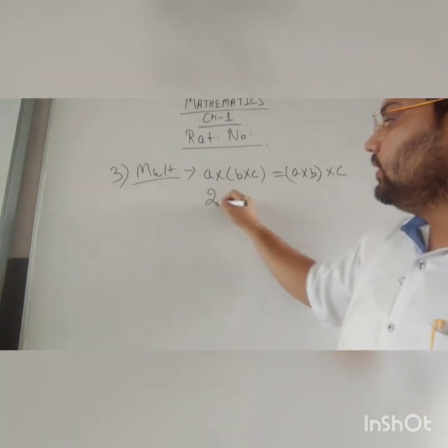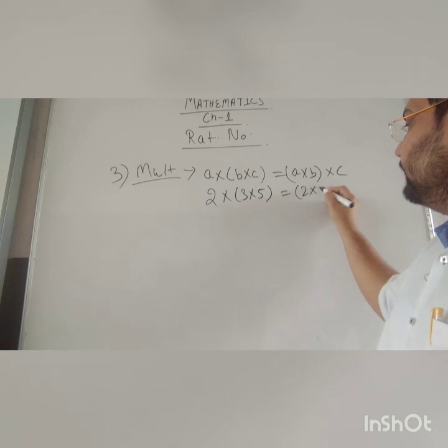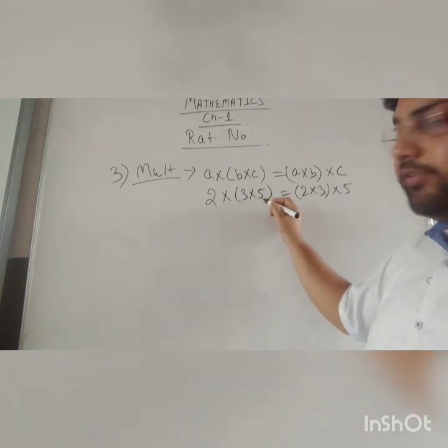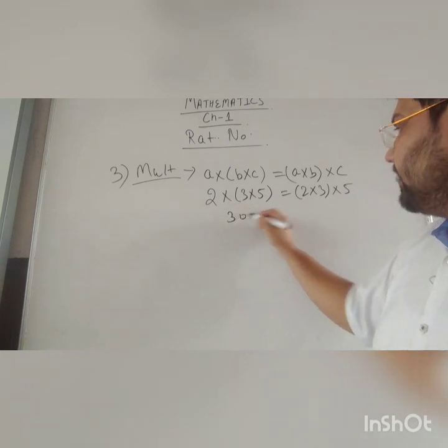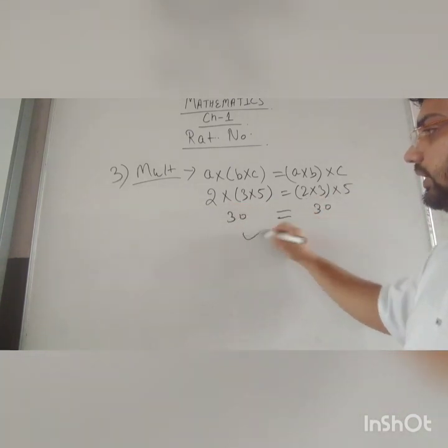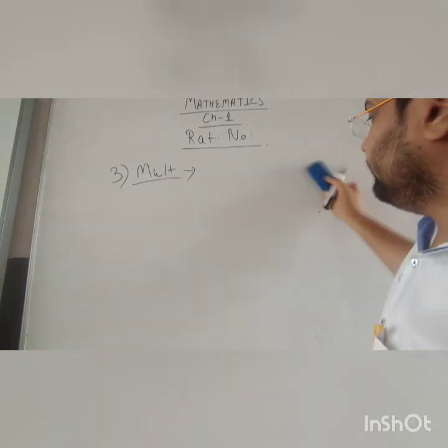You can take an example: 2 into 3 into 5 equals 2 into 3 into 5. Now 3 into 5 is 15, 2 into 15 is 30. 2 into 3 is 6, 6 into 5 is 30. So both are equal. Associativity is true for multiplication of whole numbers.